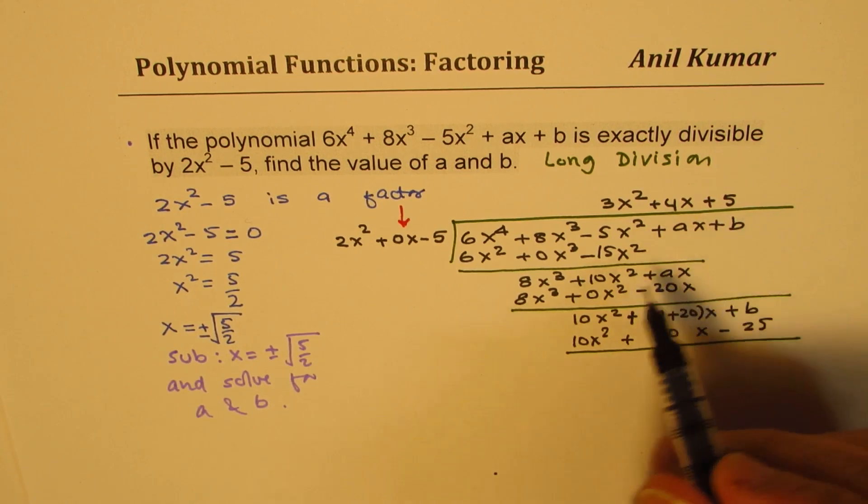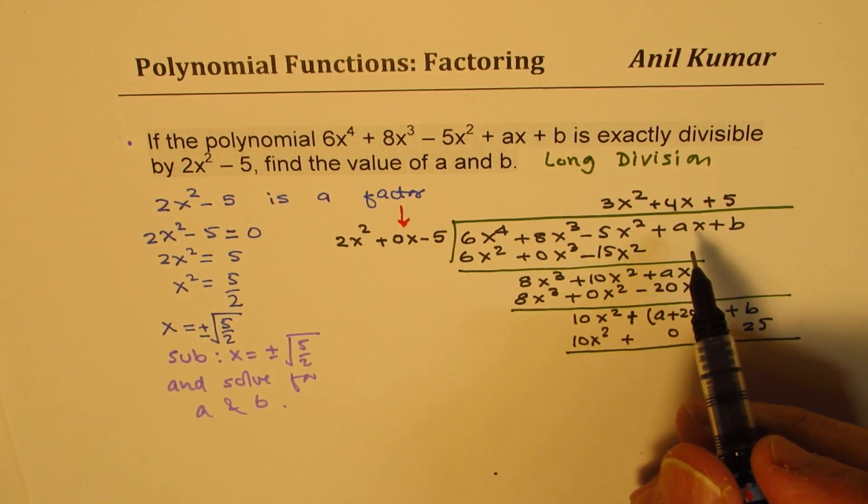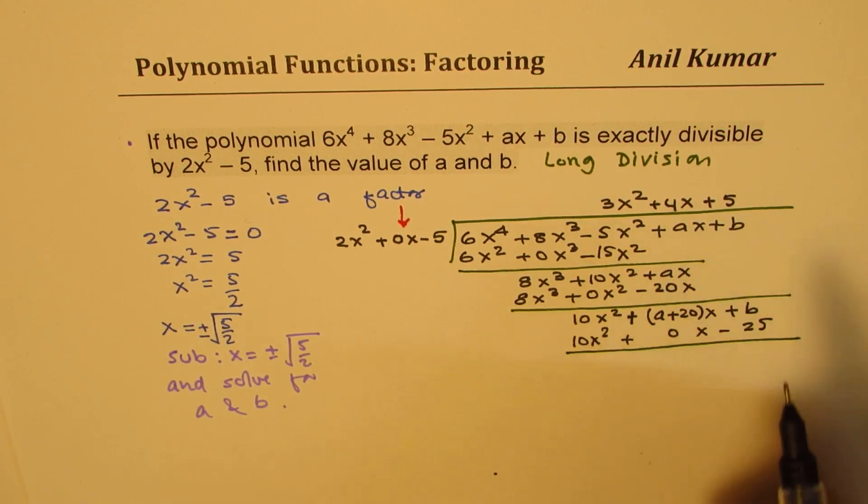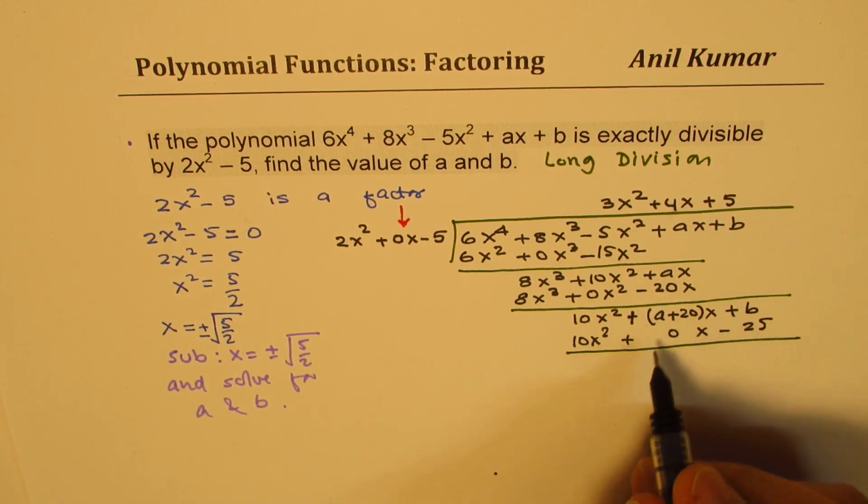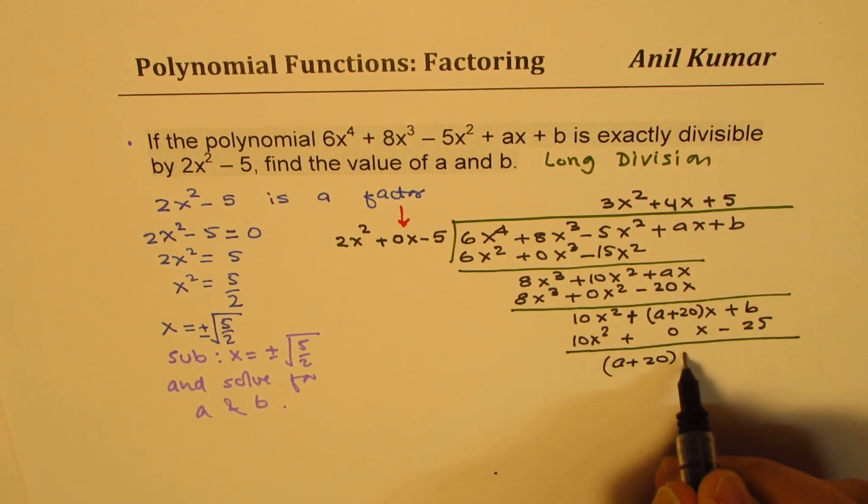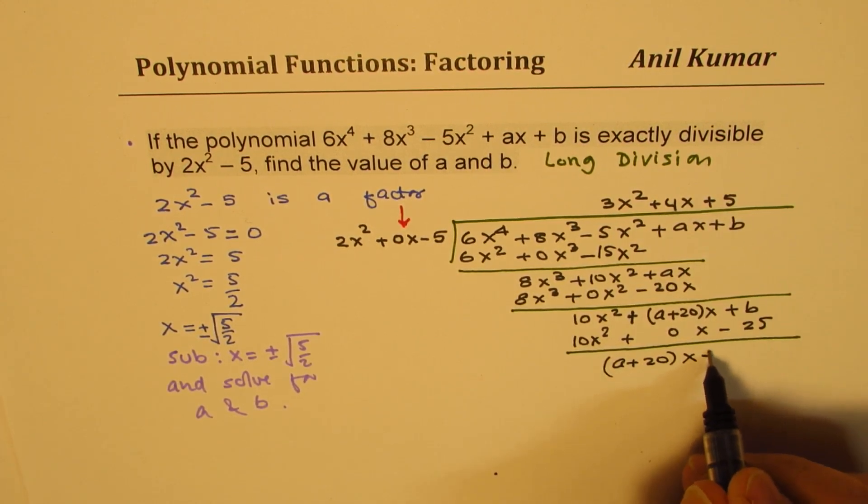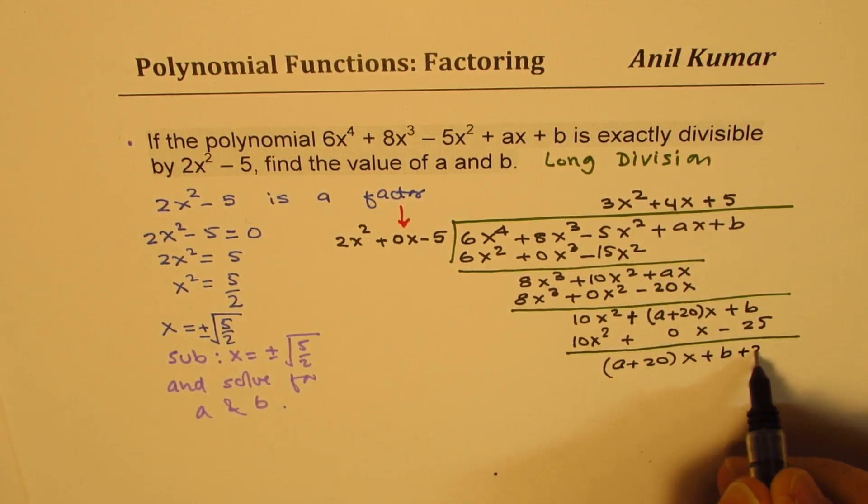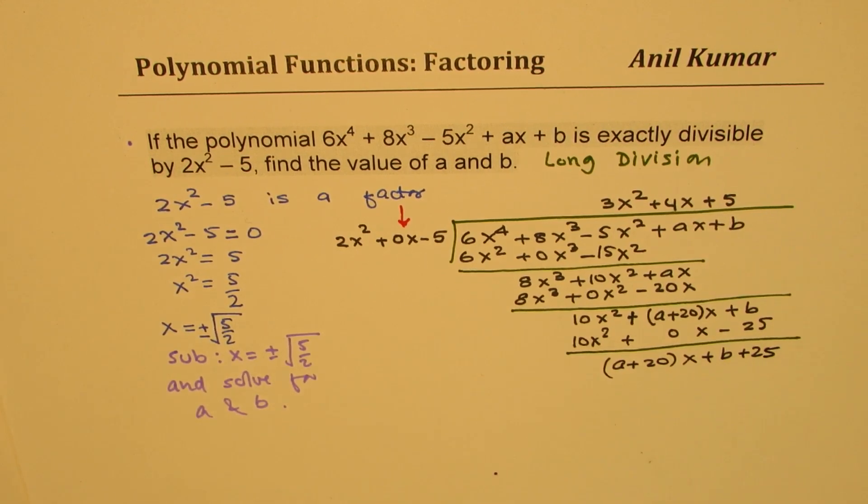When you take this difference, then what you get really is, this cancels, but you have here a plus 20x, and here you get plus b plus 25. That's what you get.